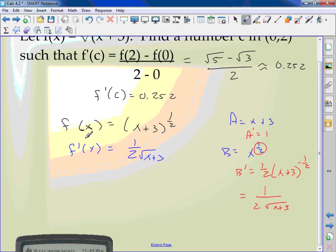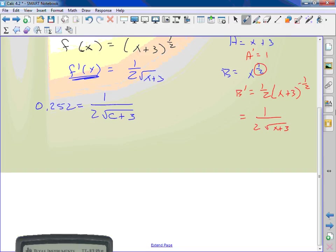Now all I'm going to do is set this equal to this. So I have 0.252 equals 1 over 2√(c + 3). I went from f(x) to f(c). What can I do to make this problem a little bit easier right off the bat? Flip it. 1 over 0.252 equals 2√(c + 3). I just flipped it to get the variable on top.